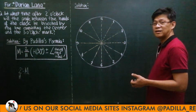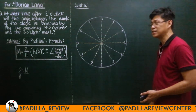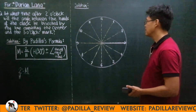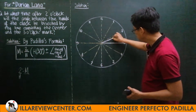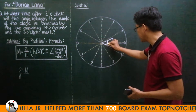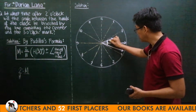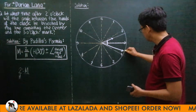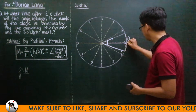At what time after 2 o'clock will the angle between the hour hand and the minute hand be bisected by the line connecting the center and the 3 o'clock mark? So the 3 o'clock line is the bisector. Since it is past 2 o'clock, the hour hand is here and the minute hand is here, and this angle between them is bisected — meaning both sides are equal. If one side is theta, the other is also theta.